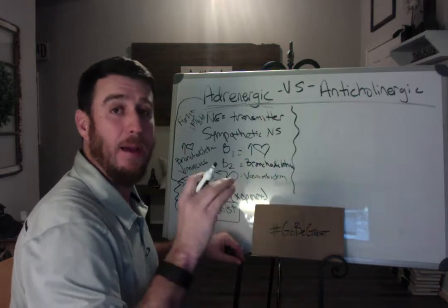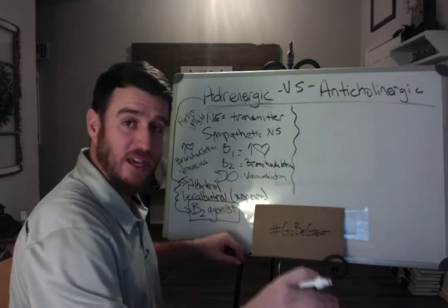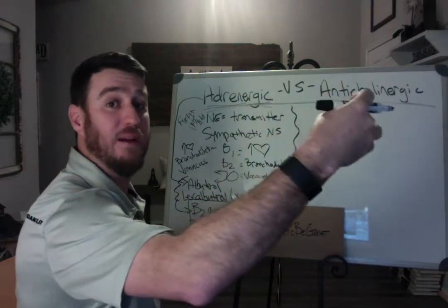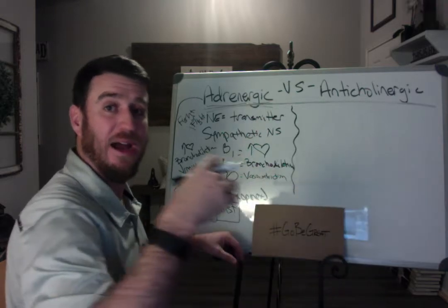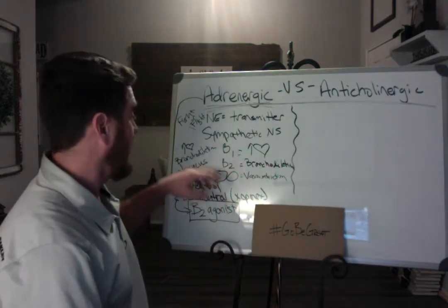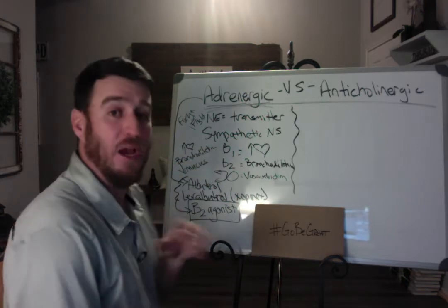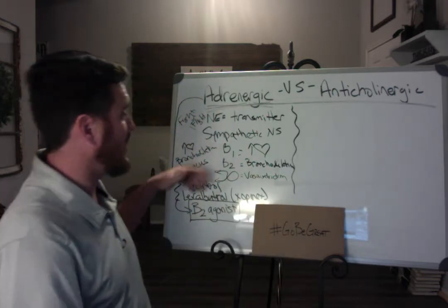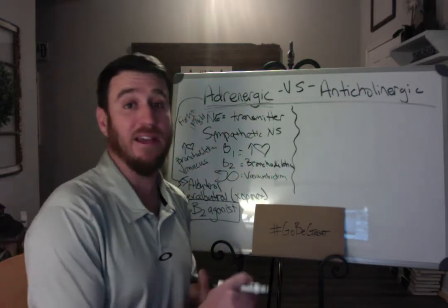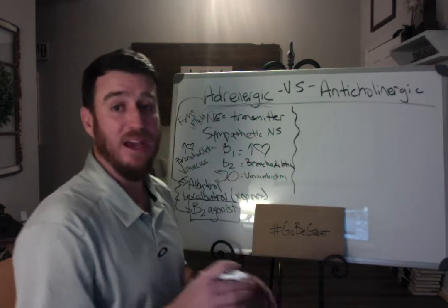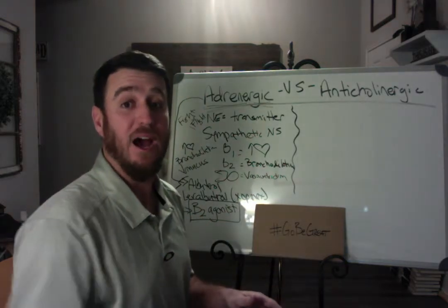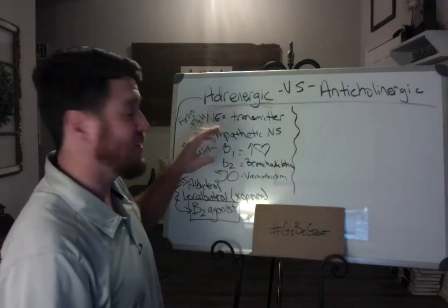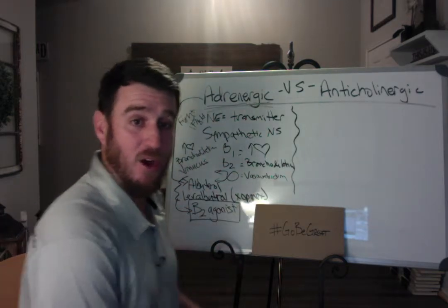Our adrenergics also include all of our long-acting beta adrenergics — 'beta' referring to the receptor, 'adrenergic' referring to the neurotransmitter. This can go on and on — we could talk about alpha agonists and racemic epinephrine, but I don't have enough board room to go into that right now. I'll cover that in a separate video. For now, understand this adrenergic concept.